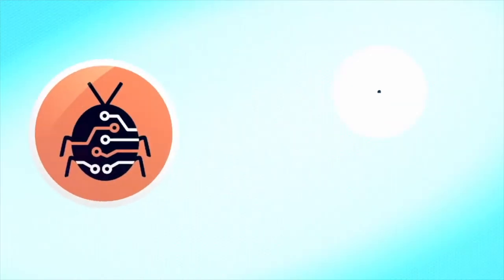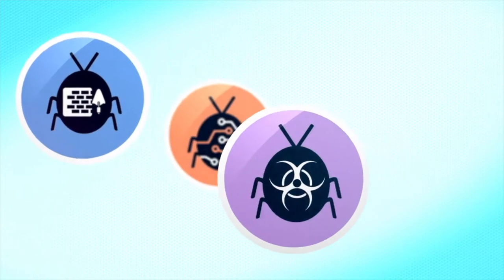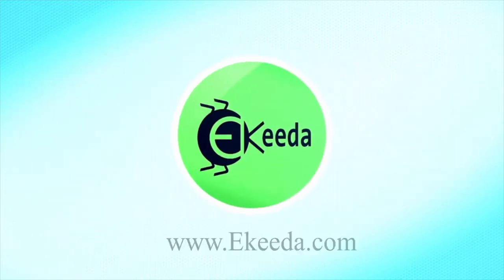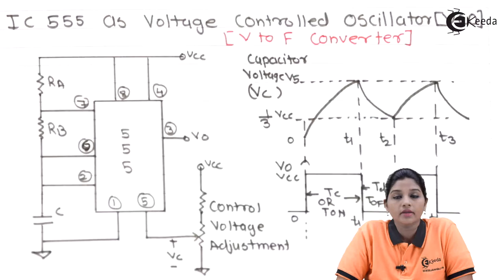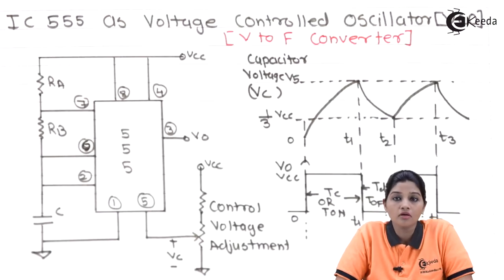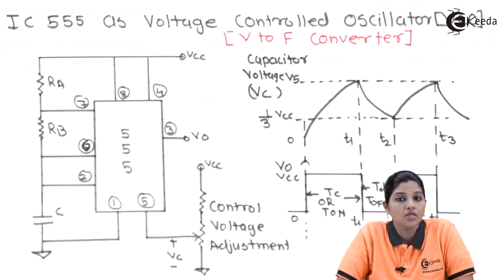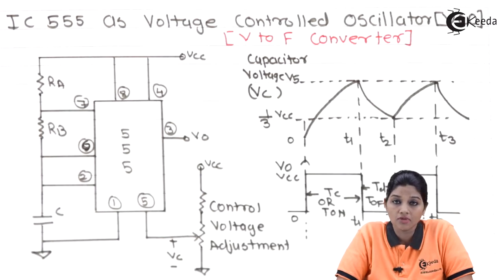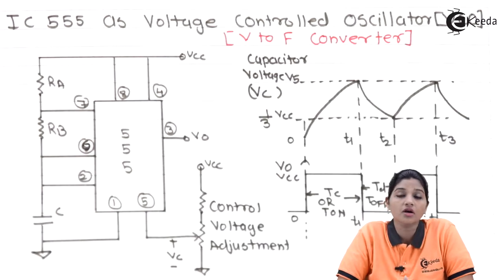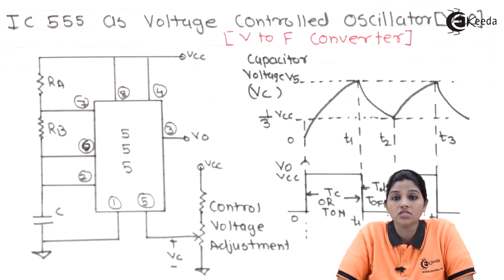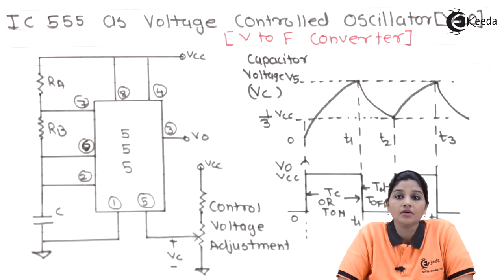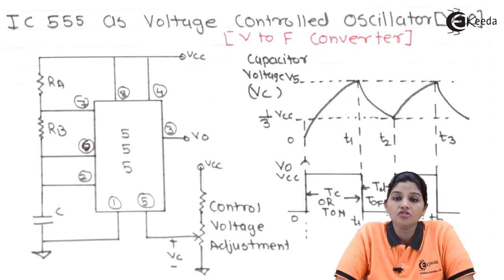Timer IC 555 is one of the most popular timer ICs, having many applications such as it can be used as a multivibrator, a voltage control oscillator, DC to DC converter, and many more. A multivibrator is basically a circuit which has either 0, 1, or 2 stable states. Depending upon the stable state, the multivibrator can be classified into three types. Similarly, the timer IC 555 also has three modes of operation.